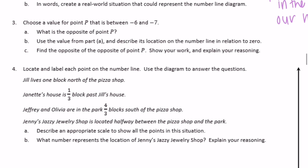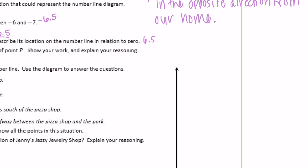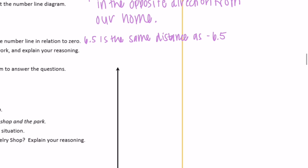Number 3: choose a value for point P that is between negative 6 and negative 7. I'll choose negative 6 and a half — you could write it as a fraction too. The opposite of point P would be positive 6 and 5 tenths. To describe its location on the number line in relation to zero: 6 and a half is the same distance as negative 6 and 5 tenths from zero.